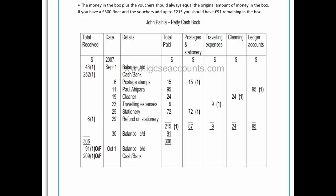If we look at this actual petty cash book, we can see there is a balance brought down on the received side of $48. The way to understand the petty cash book is to think of the received side as money coming in — almost like a debit — and the total paid side as money leaving the business on the credit.